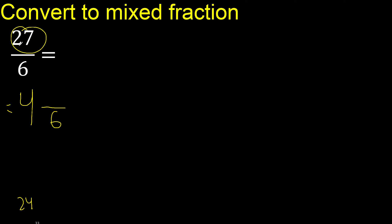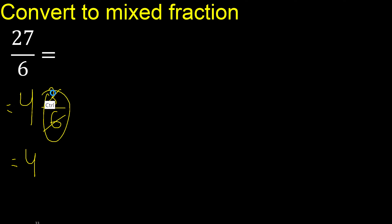27 minus 24 is 3. This can be simplified because it can be divided by the same number: 3 divided by 3 is 1, 6 divided by 3 is 2. Finish.